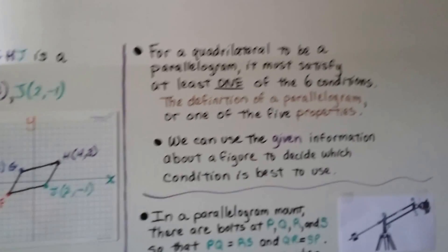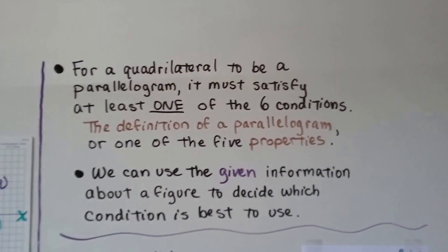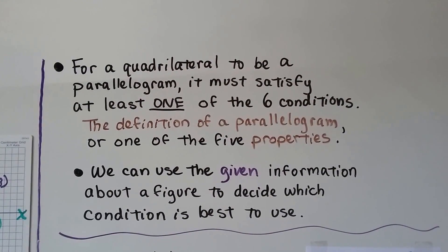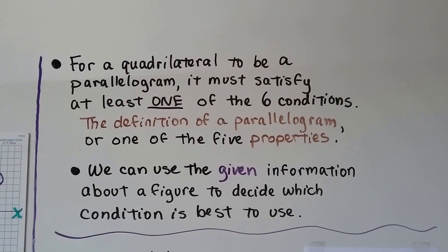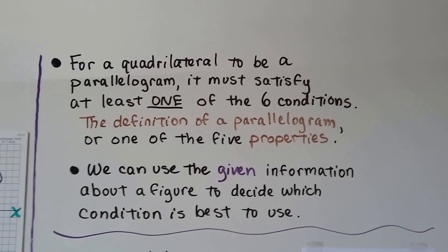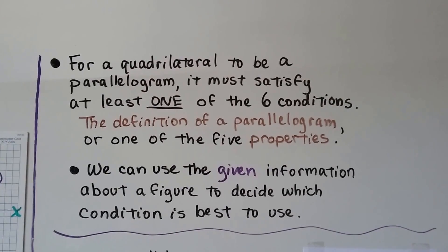So for a quadrilateral to be a parallelogram, it must satisfy at least one of the six conditions: the definition of a parallelogram and one of the five properties. And we can use the given information about a figure to decide which condition is best to use.